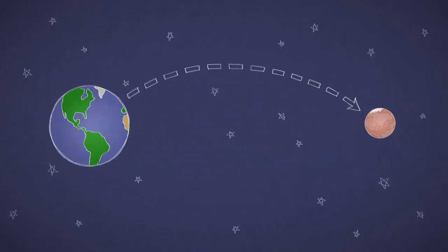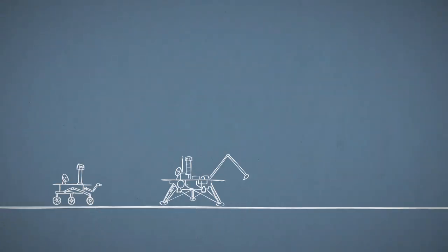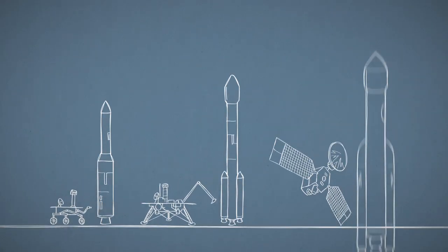How do you get to Mars? If you want to send a spacecraft all the way to Mars, first you'll need a fast rocket to escape the pull of Earth's gravity. The heavier your spacecraft, the more powerful your rocket needs to be to lift off.